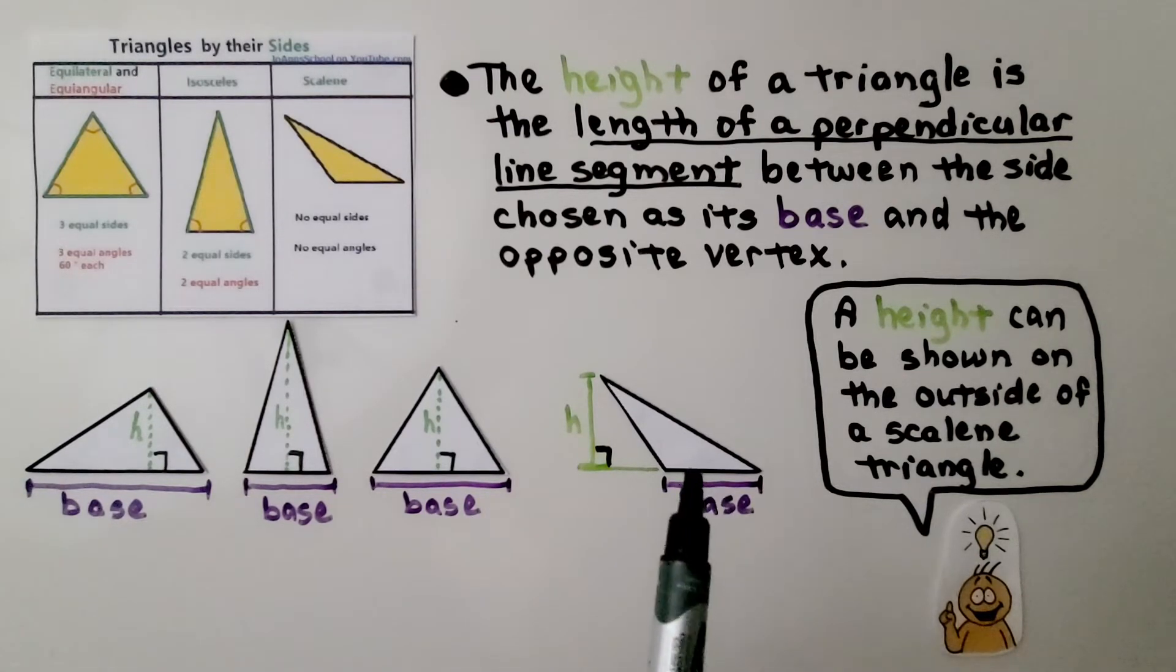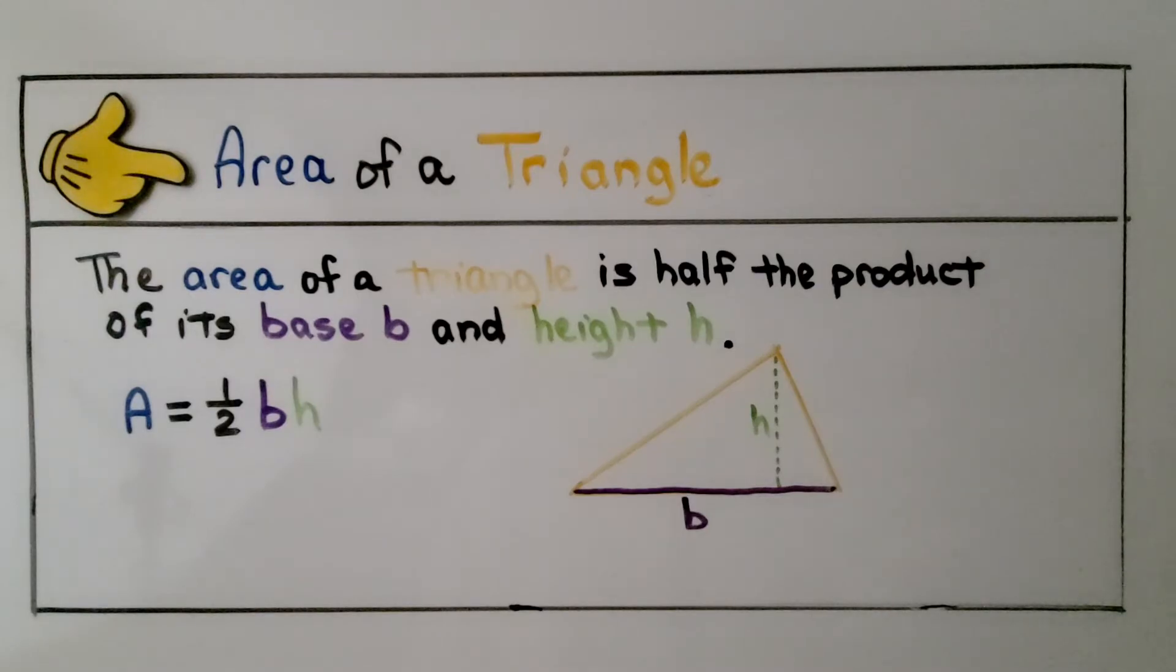But be careful, this is still the base from this point to this point. So for your notes, the area of a triangle is half the product of its base b and height h. We multiply the base times the height and we can multiply that by half. We have our area.